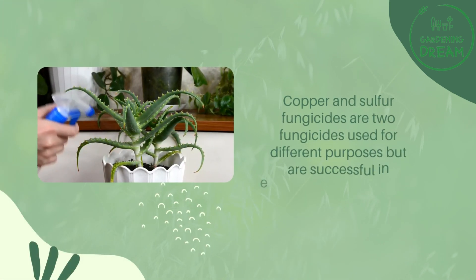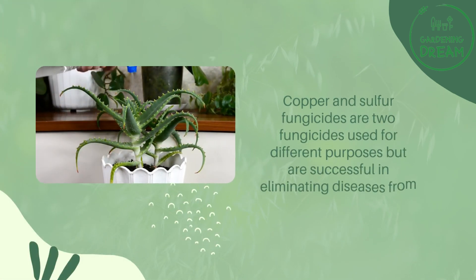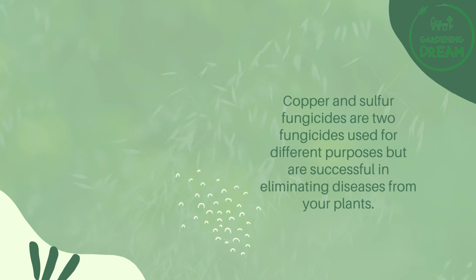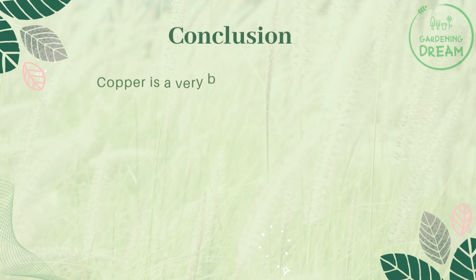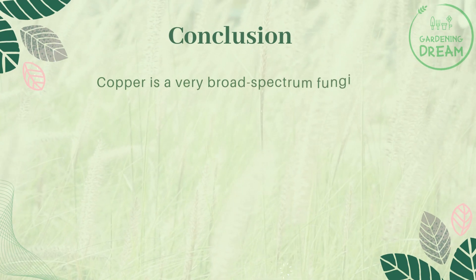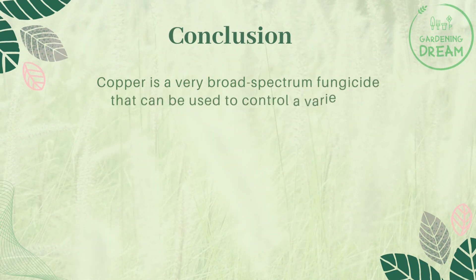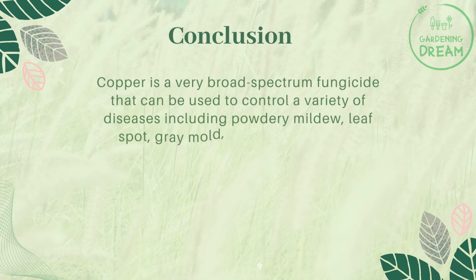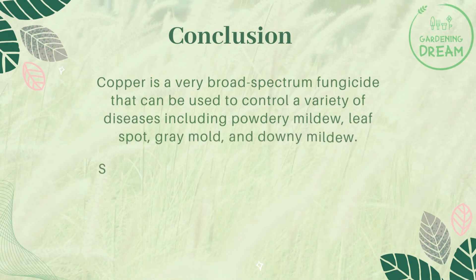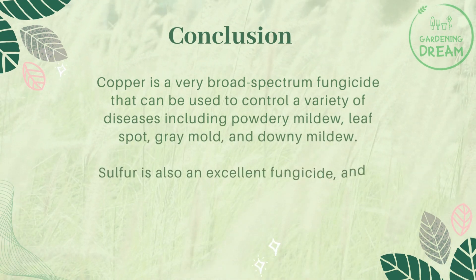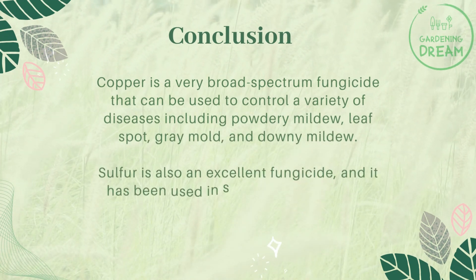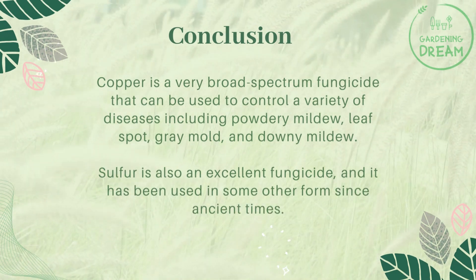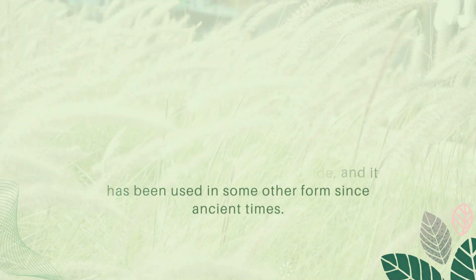Copper is a very broad-spectrum fungicide that can be used to control a variety of diseases, including powdery mildew, leaf spot, gray mold, and downy mildew. Sulfur is also an excellent fungicide and has been used in some form since ancient times.